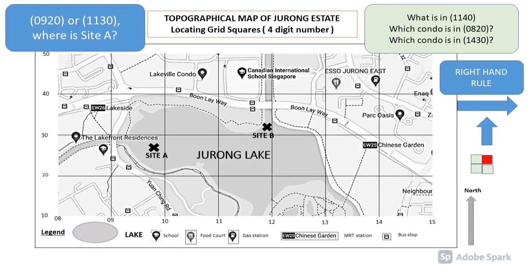Let's take a look at an example. Which of these two 4-digit grid references would you find Site A in — 0920 or 1130? Let's check 1130 first: locate easting 11 at the bottom — that's a vertical line. Follow that vertical line upwards until it intersects the horizontal line representing northing 30. At that intersection you will see four grid squares — look at the top right-hand corner, and you'll see Site B marked with an X. Now for 0920: locate easting 09, move upwards to the intersection with northing 20, look at the top right-hand corner, and you will see that Site A is in grid square 0920.